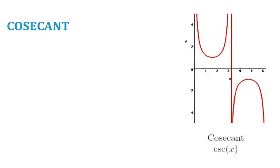Cosecant is the reciprocal of sine. So cosecant is one over sine. So the sine curve can be used to generate the picture here.